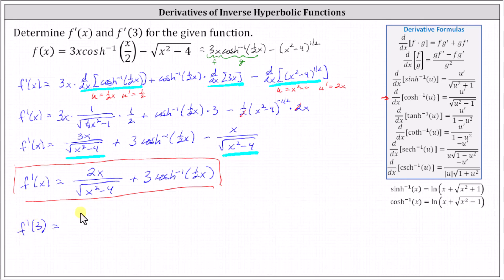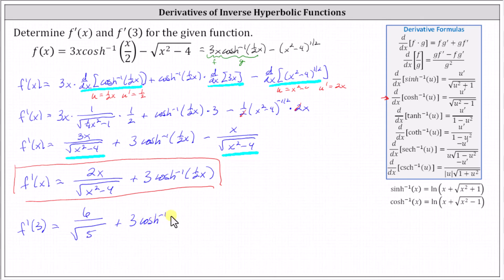When x equals three, the first fraction gives us six divided by the square root of three squared minus four, which is nine minus four equals five, giving the square root of five. Then plus three times inverse hyperbolic cosine of one half times three, or three halves. This is the exact derivative value.